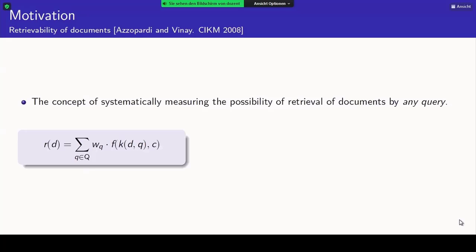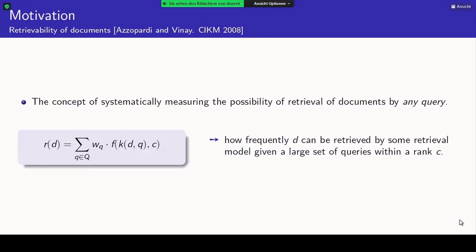Mathematically it looks like a formula, but roughly it translates to how frequently a document will be retrieved within a top rank by any of the queries that will be submitted to a system. So, retrievability of a document is how frequently it can answer some queries that will be submitted to a system.